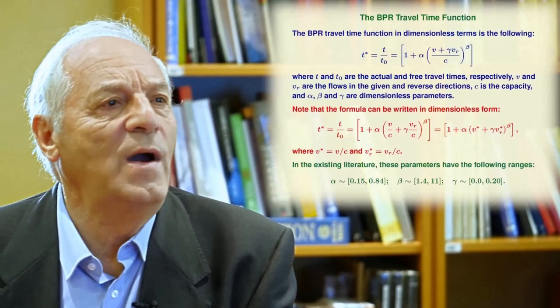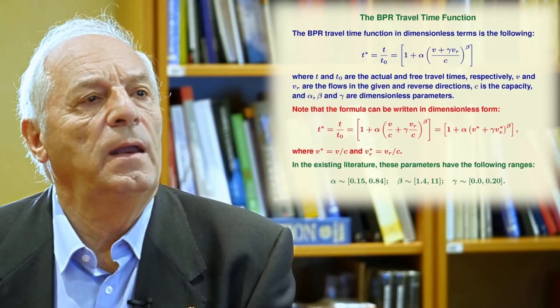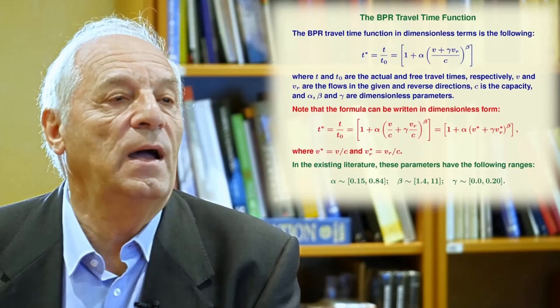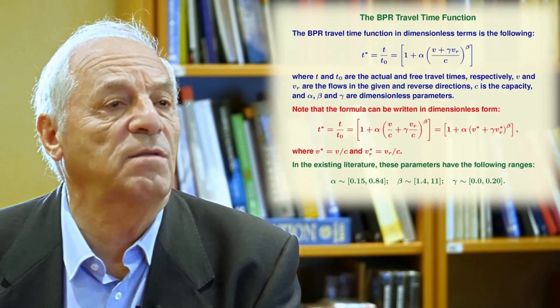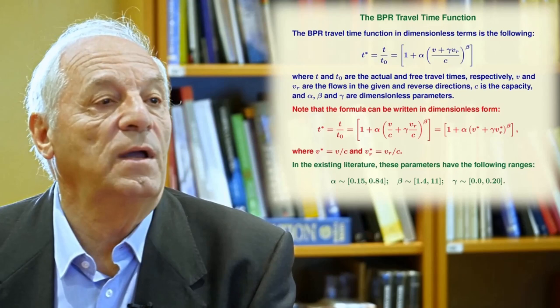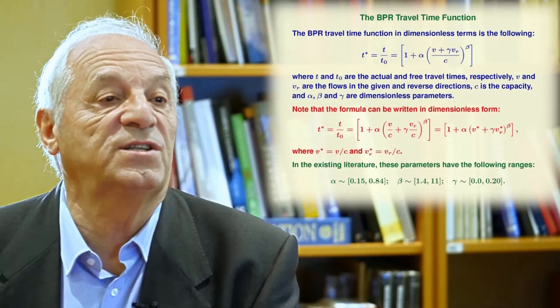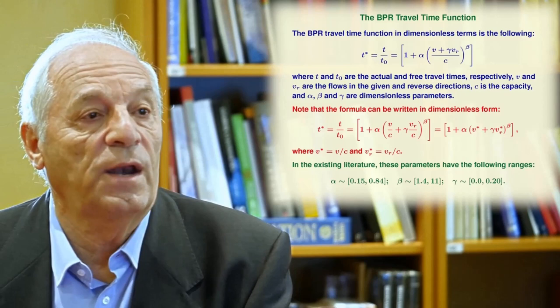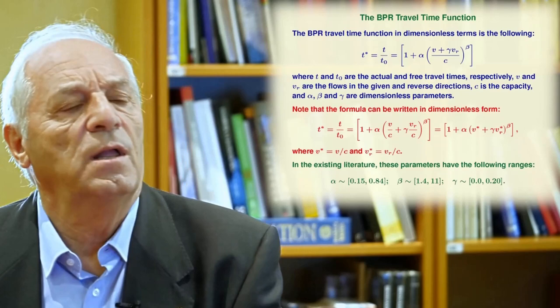The BPR travel time function gives you the time required to travel a section of a highway. T0 is the time required when there are no other cars, giving the minimum travel time. Alpha, beta, and gamma are parameters of the model. C is the capacity of the highway or this segment of highway. B and BR are the number of cars circulating in the same and in contrary direction respectively. We can write this expression in dimensionless form using asterisk variables — it is very important to work with dimensionless variables to avoid problems. The parameters take different values in the literature, and these are the normal ranges that will be used for building the model.